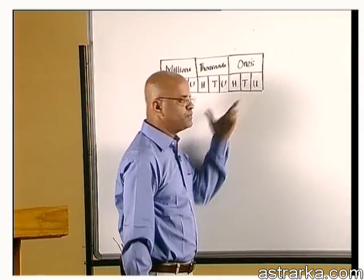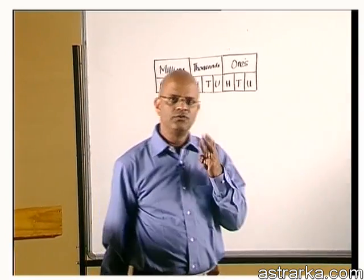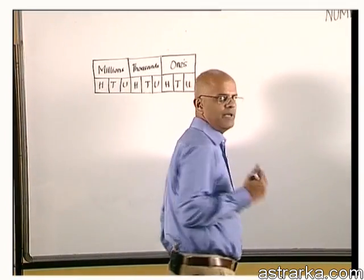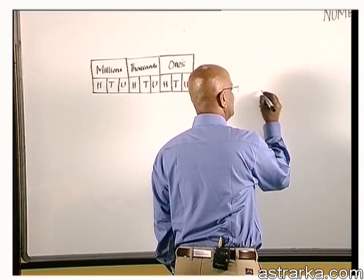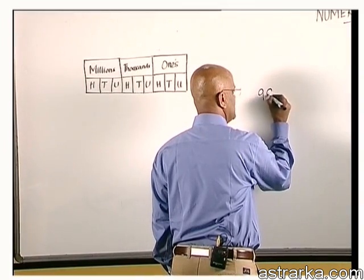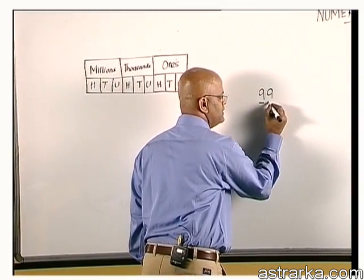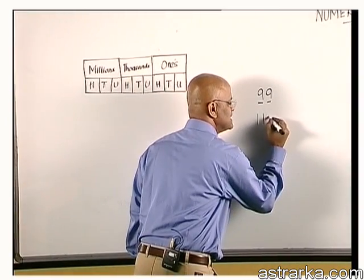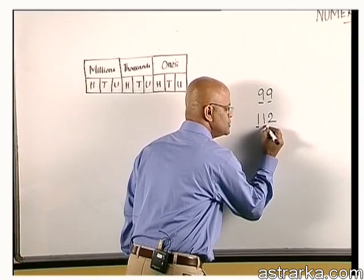So, in each period, you have three digits. What are digits? The number of numbers that make up the number. So, 99 has two digits, one, two. 112 has three digits, one, two, three.